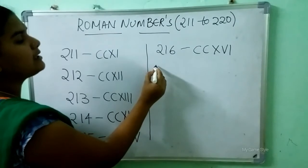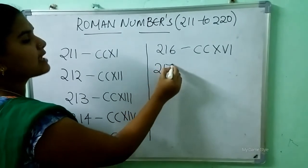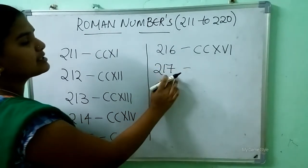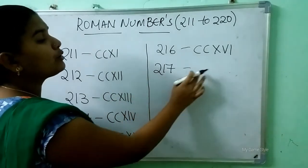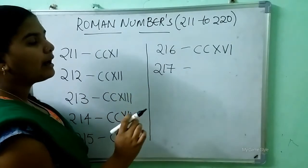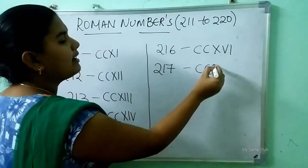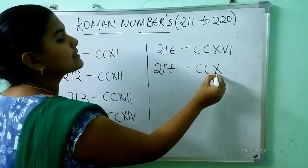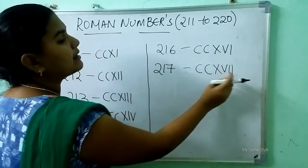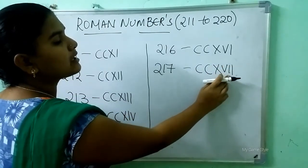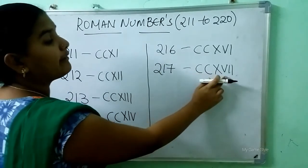After 216 comes 217. So how to write 217 here? Double C is 200, X, V, double I is 17. So this means 217.